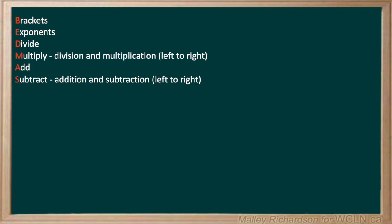Now we move on to 2 plus 2 times 5. This question only has addition and multiplication, so we know that multiplication comes before addition. So we do 2 times 5, which gives us 10, and then we add on 2 to get a final answer of 12.